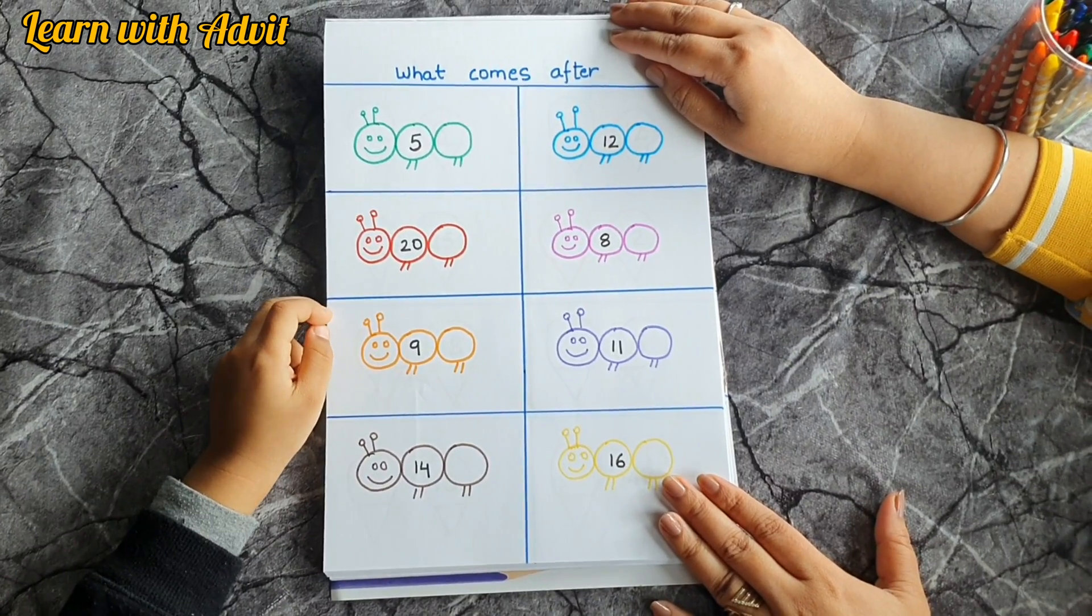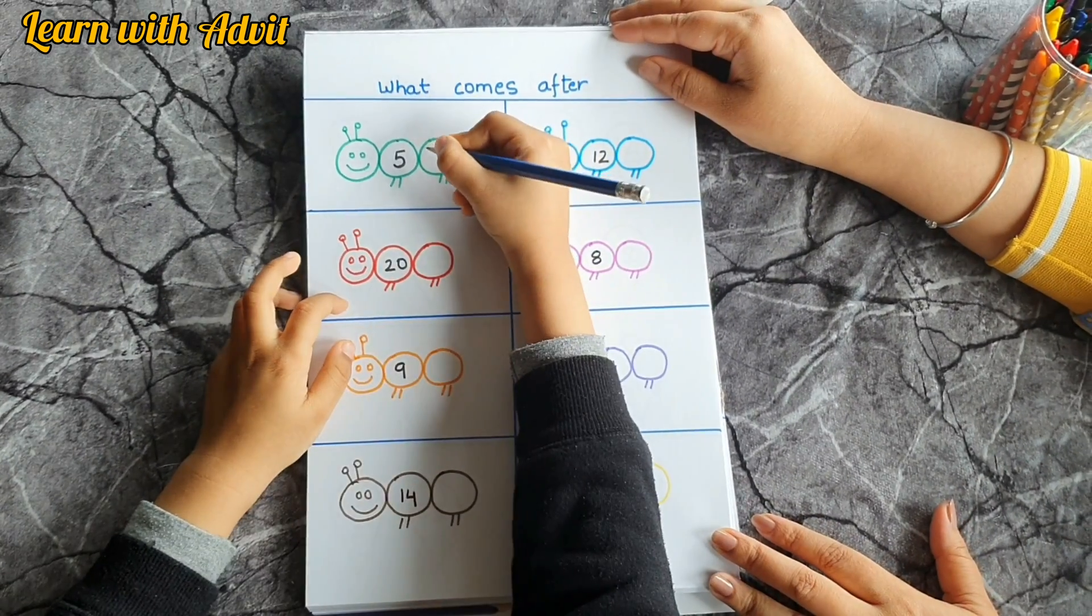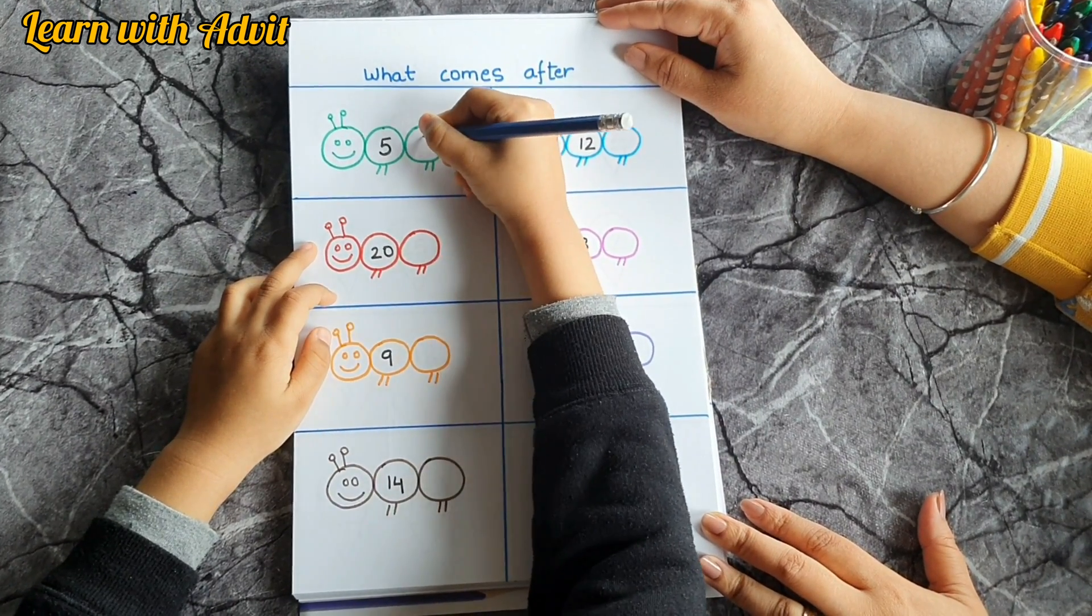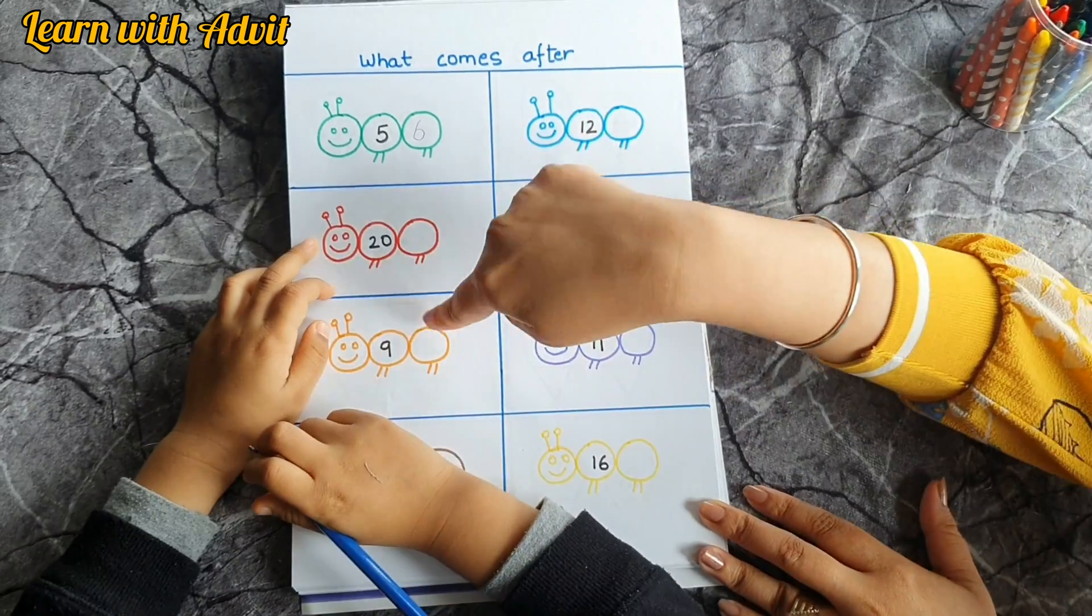Okay, sheet about what comes after. Come on, start doing. Five, after five is six, very good. After nine, ten, good. And after sixteen, seventeen, very good.